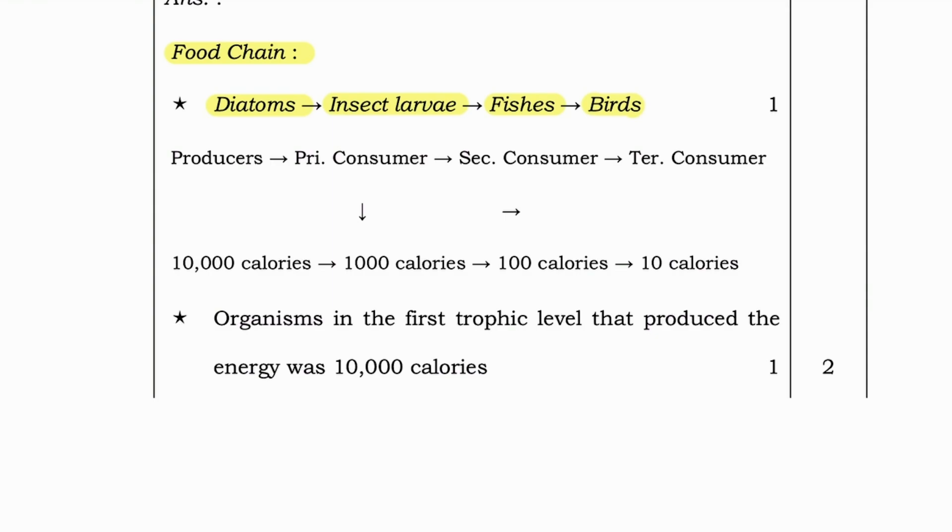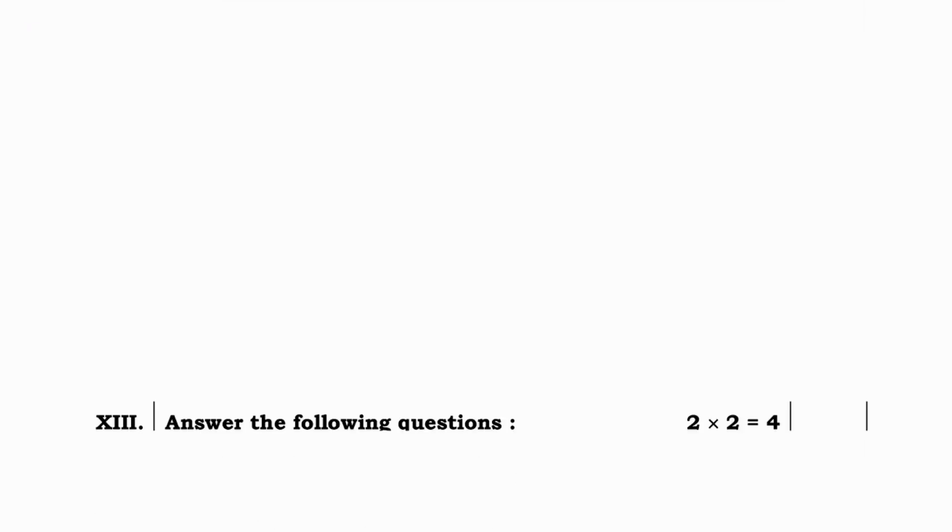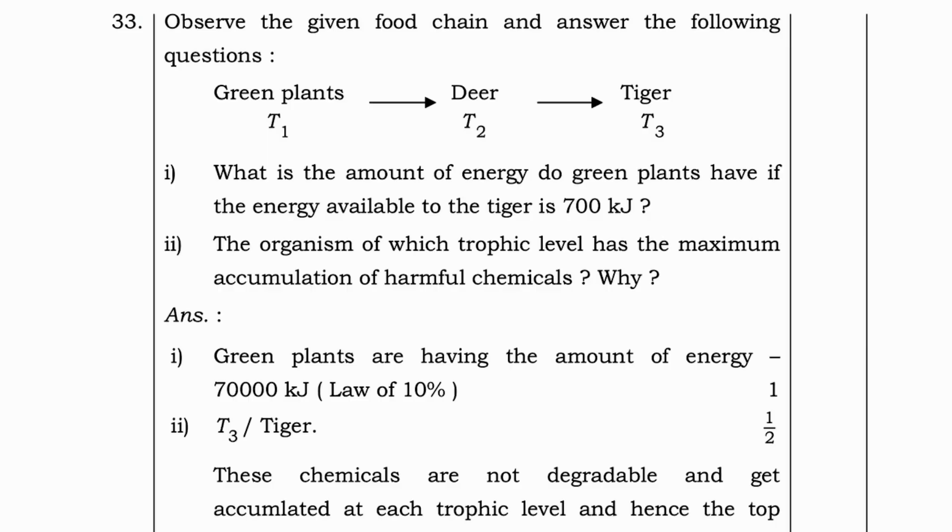Those are what above given. First, diatoms means producers. Then primary consumers. Then secondary consumers. Then tertiary consumers. So, primary consumers means 10,000 calories. Then 1000 calories. Then 100 calories. Then tertiary consumer will get 10 calories. Like that, organisms in the first trophic level that produced the energy was 10,000 calories.